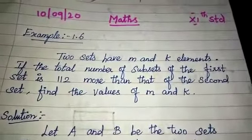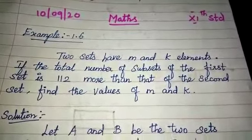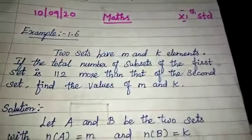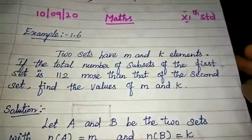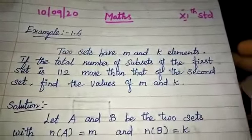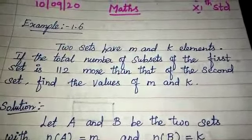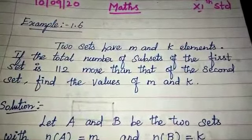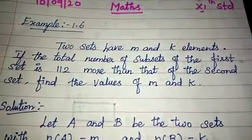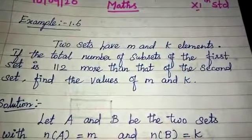Hi, hello students. Today we have 11th Standard, Example 1.6. Two sets have M and K elements. If the total number of subsets of the first set is 112 more than the second set, find the values of M and K.